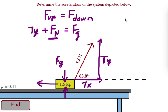Once we have our force normal, then we use our force friction is equal to the coefficient of friction times the force normal.